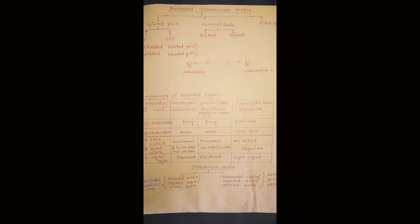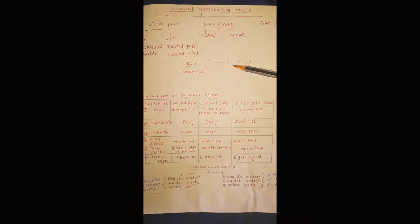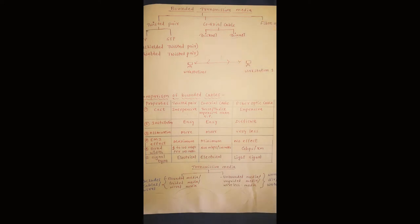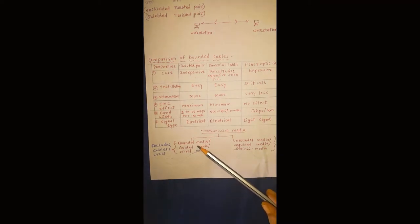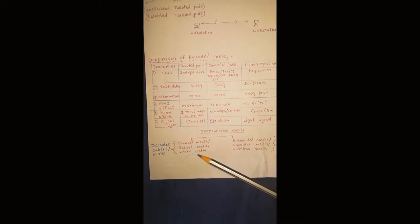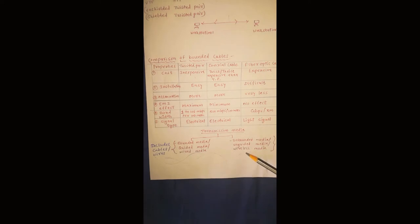This transmission media means two computers communicate with each other via some media, and this media is called transmission media. This transmission media is of two types, mainly called bounded media or unbounded media, also called guided media or unguided media, or wired media or wireless media — all one and the same.